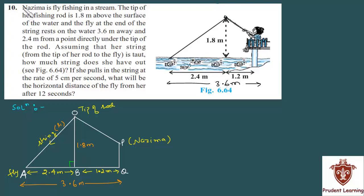We are given: Najima is fly fishing in a stream. The tip of her fishing rod is 1.8 meters above the surface of water, and the fly at the end of the string rests on the water 3.6 meters away and 2.4 meters from a point directly under the tip of the rod.